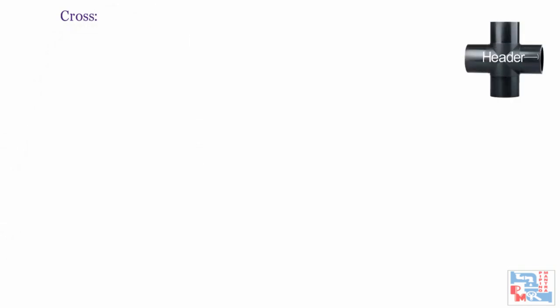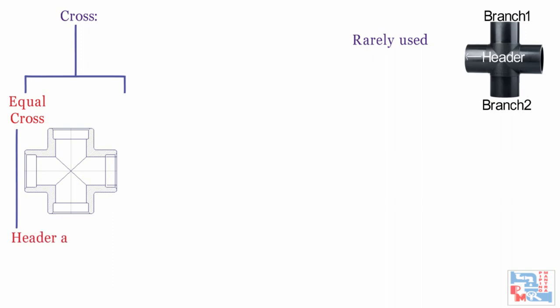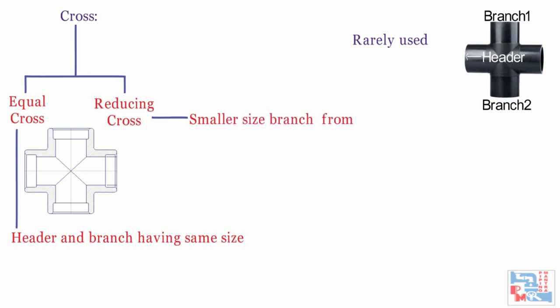The next fitting is the cross. It is used to have two branches connect at the same point on the header — basically a 4-way fitting. This fitting is very rarely used in piping systems. There are two types: straight or equal cross, with header and branch connections of the same size; and reducing cross, with smaller branch connections. It is preferable to use Ts except where space is restricted, as in marine piping.